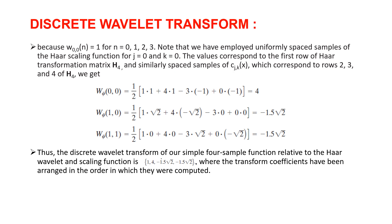By repeating the process, we will get the corresponding values which correspond to rows 2, 3, and 4 of the Haar transformation matrix as 4, -1.5√2, and -1.5√2.